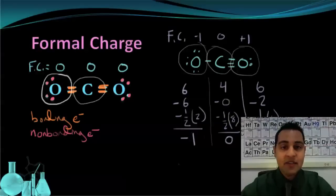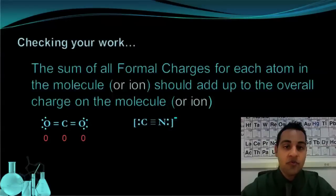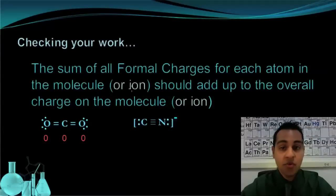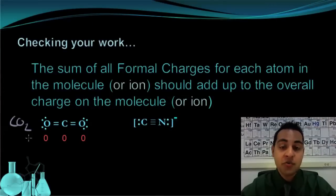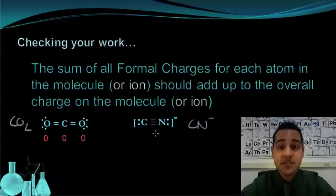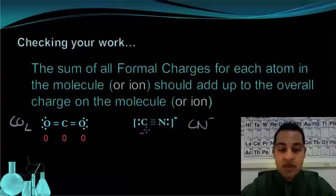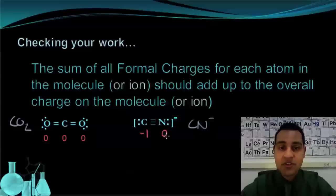One last thing: it's very easy to check your work for formal charges. The sum of all formal charges for each atom in the molecule or ion adds up to the overall charge on that molecule. Carbon dioxide is a neutral molecule, and its formal charges all add up to 0. For a different example, the cyanide ion: if we assign formal charges to its Lewis structure, carbon is negative 1 and nitrogen is 0. Adding those up gives negative 1, which is the overall charge on this ion.